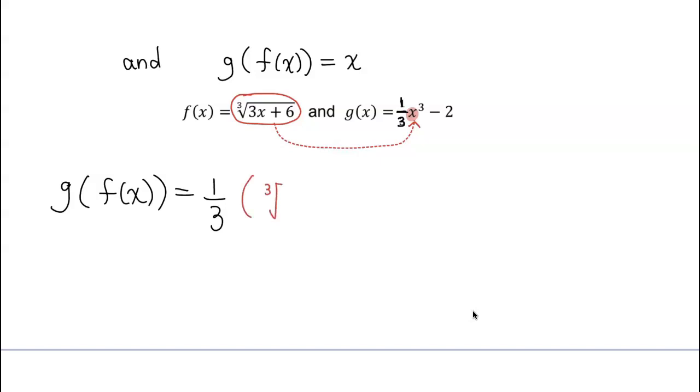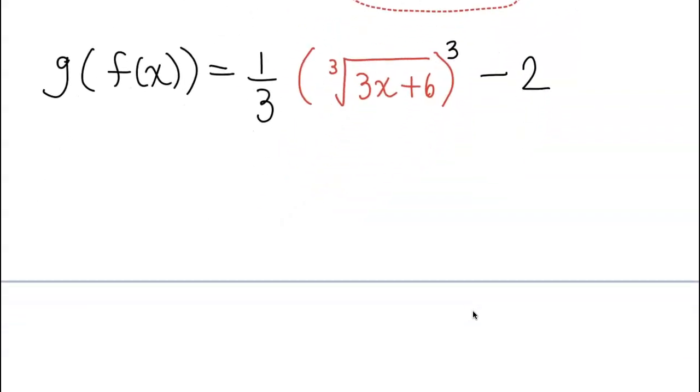Minus 2 outside. All right, now that's it for composition, let's go ahead and simplify this. Keep that one third, but you notice there is cube root and there is cubing.